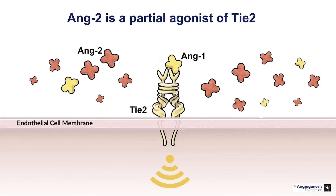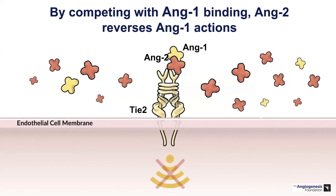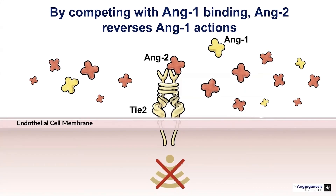Angiopoietin 1 and angiopoietin 2 bind to the exact same receptor—they both bind to TIE2—but only one of them is a strong agonist. When ANG1 is bound, you get activity of the transmembrane tyrosine kinase receptor, driving the vascular stability phenotype. However, when the ratio of ANG2 to ANG1 changes and ANG2 is upregulated, ANG2 displaces ANG1 from the TIE2 receptor, preventing TIE2 intracellular signaling.